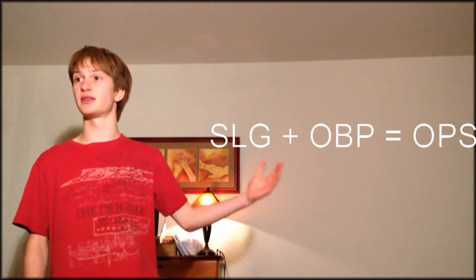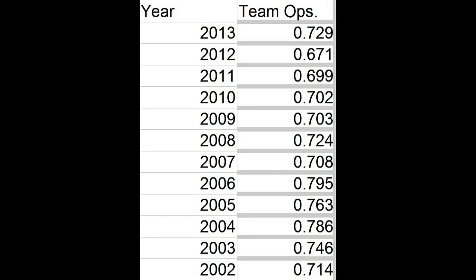Here are the Giants' team OPS over the past 11 years. And looking at the graph, there is a much stronger correlation of OPS to winning percentage, around a 0.3 r-squared value, leading me to agree with Michael Lewis on his claims.